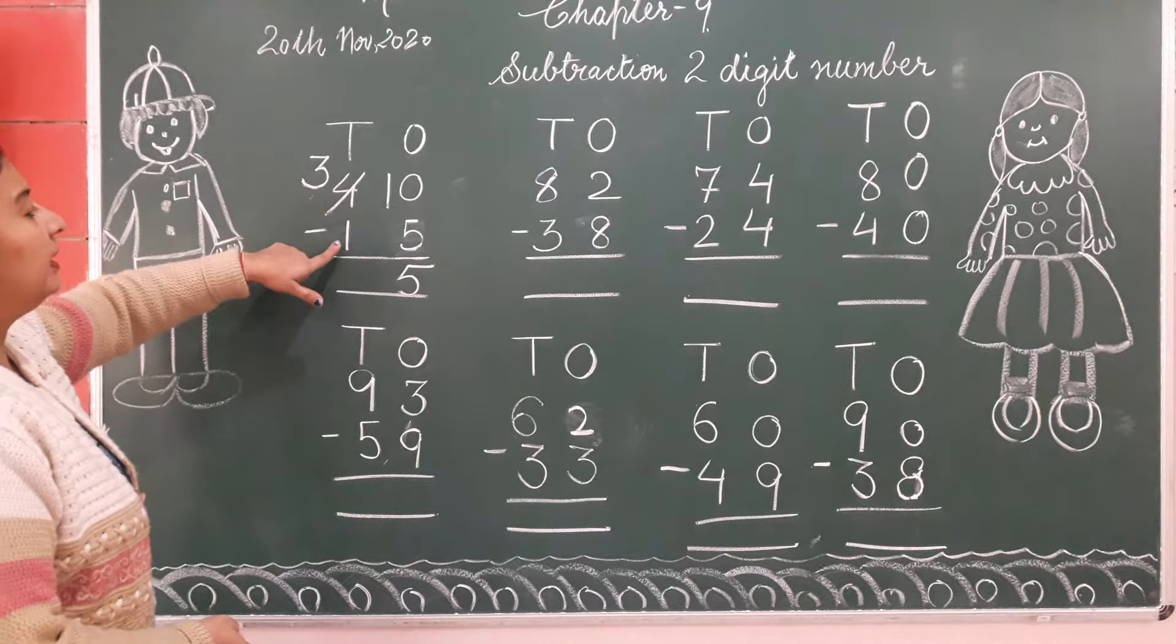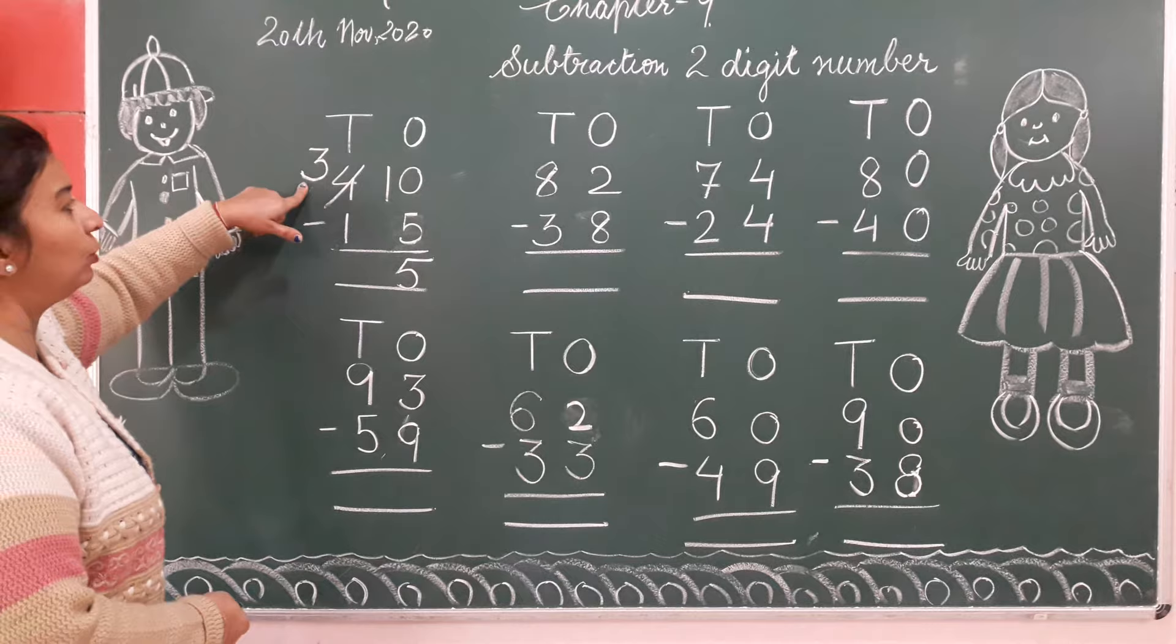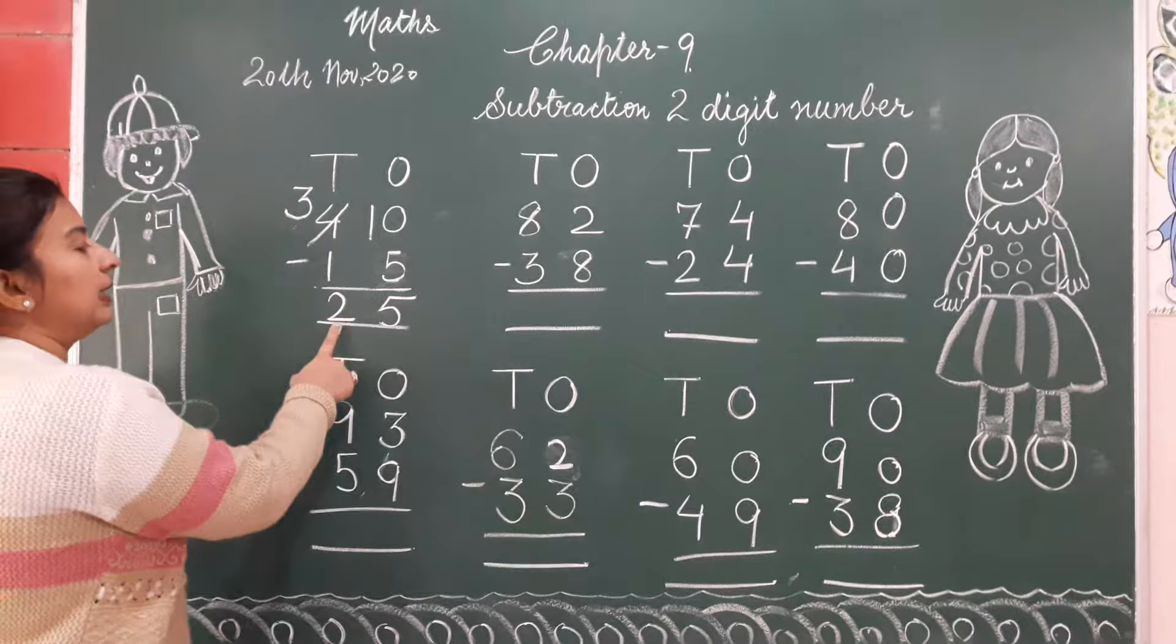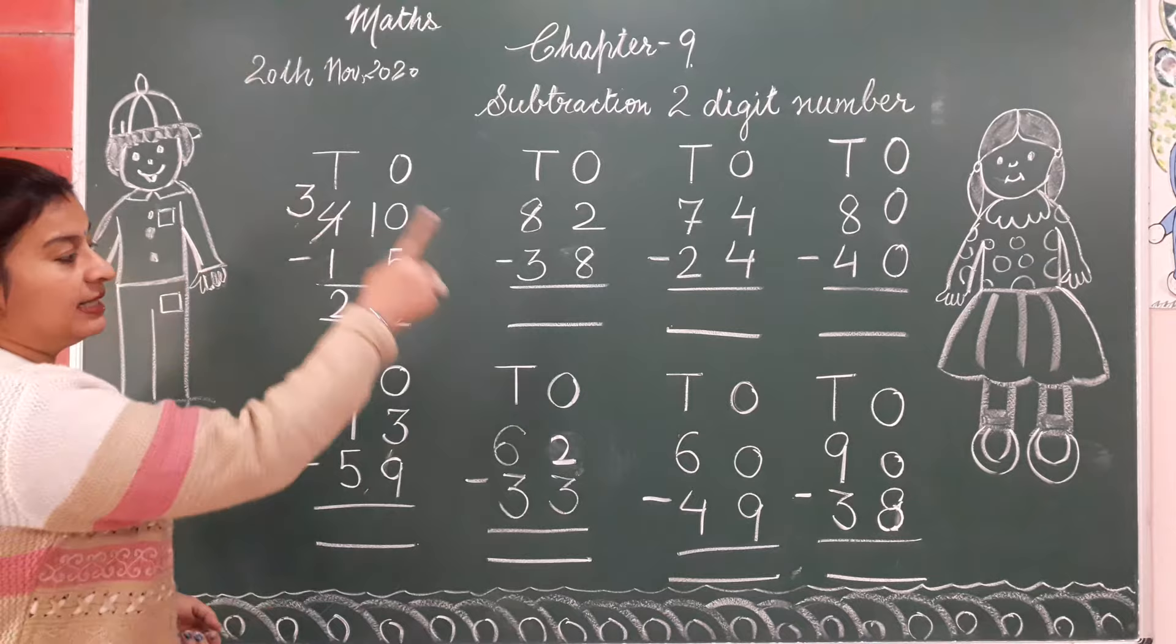Now come on, tens side. Upper number is 3, down number is 1. Start counting after 1 up to 3. 1 after 2, 3. How many are there? 2. So we will write here 2. Here your answer is 25.